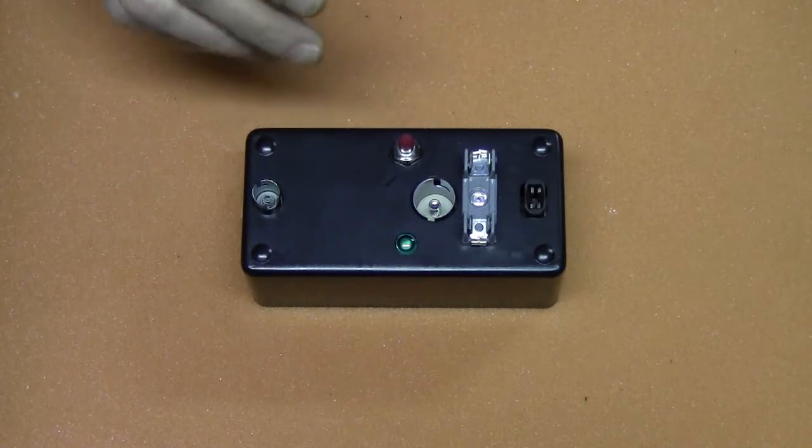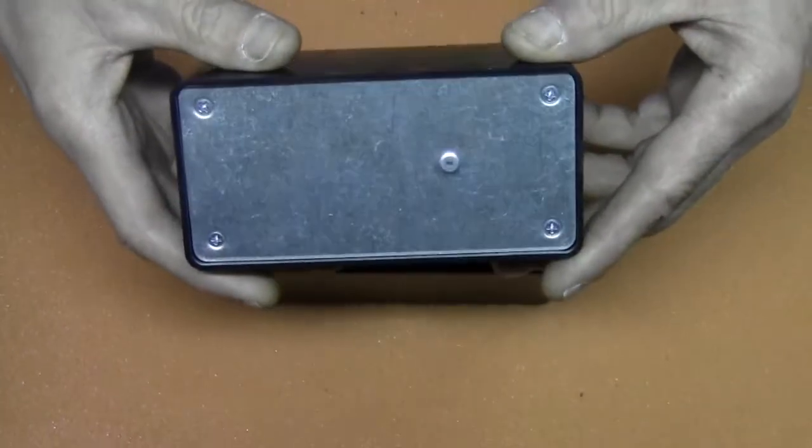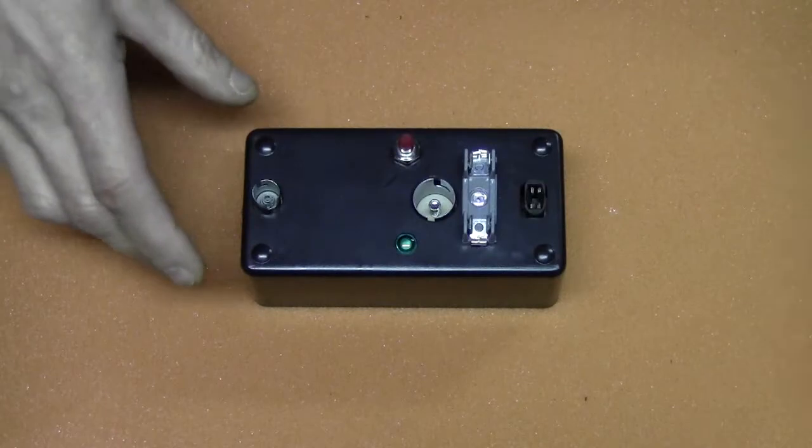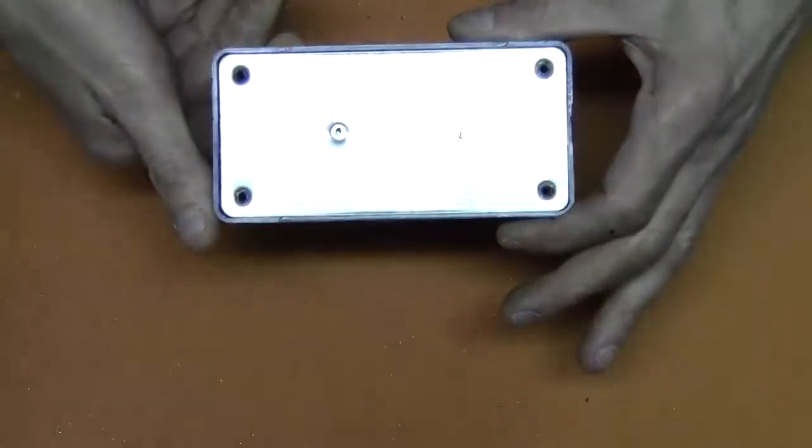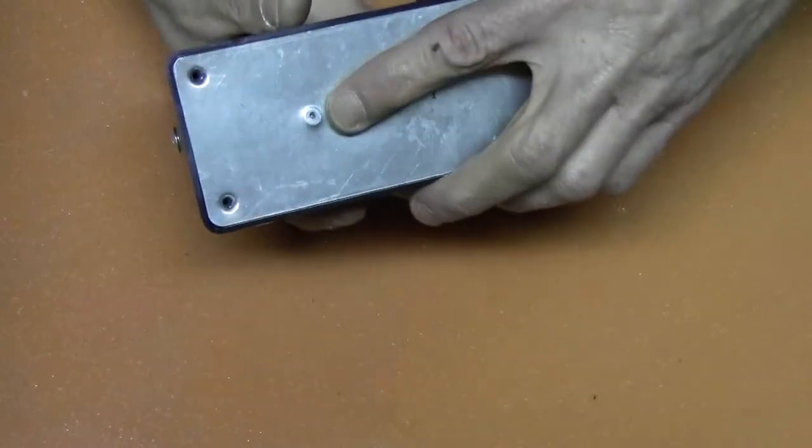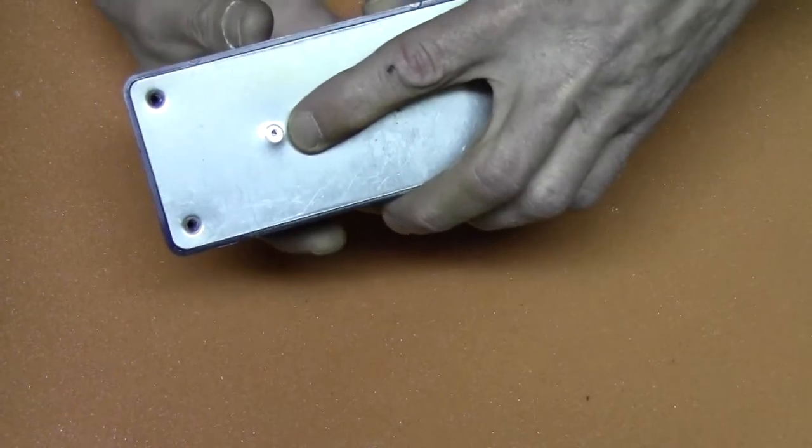When you get this unit, it's going to come with four screws in the bottom of it. Now with this one here, I've already removed the screws to save time. You'll see here a little rivet, and that's actually your battery holder.